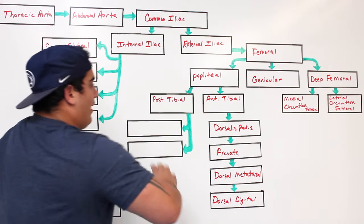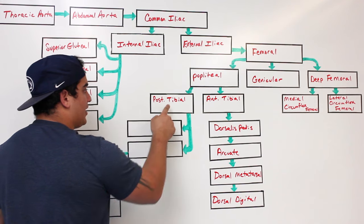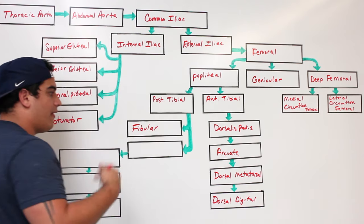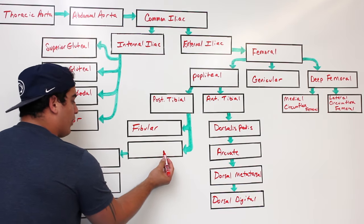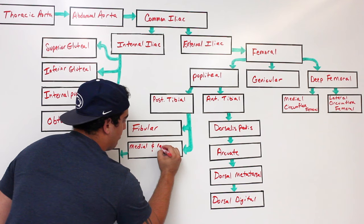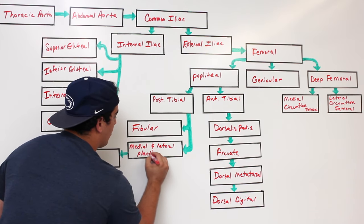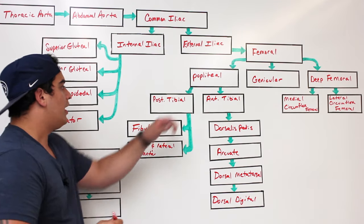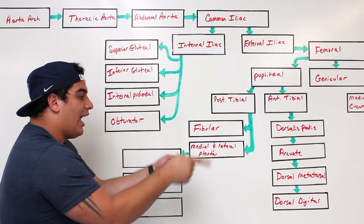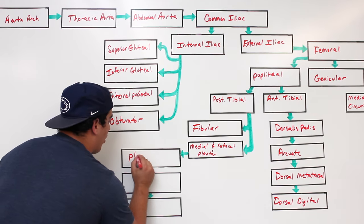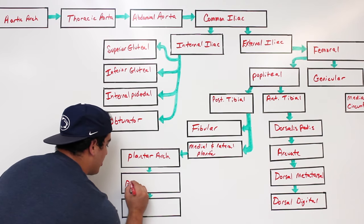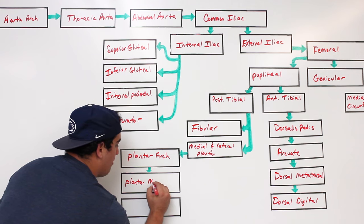The posterior tibial artery — the other branch from the popliteal — gives off a branch called the fibular artery, also known as the peroneal artery; they're the same thing. It also gives off the medial and lateral plantar arteries. These medial and lateral plantar arteries come around and form what's called the plantar arch. From the plantar arch, branches supply the metatarsal area — these are the plantar metatarsal arteries.